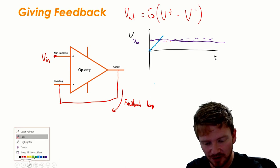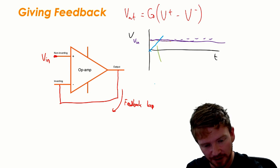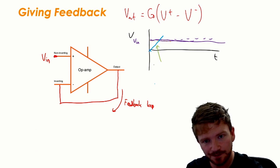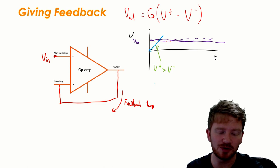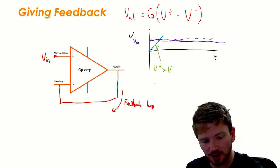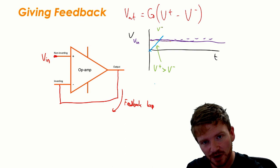So up until the point that I've drawn here, the non-inverting input is larger than the inverting input. But at the point I've just drawn now, the inverting input is going to be larger than the non-inverting input.